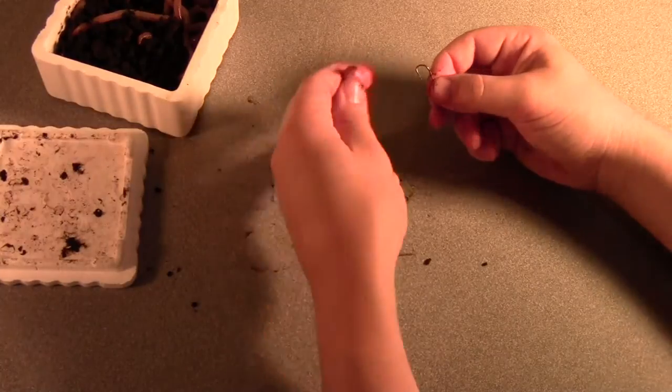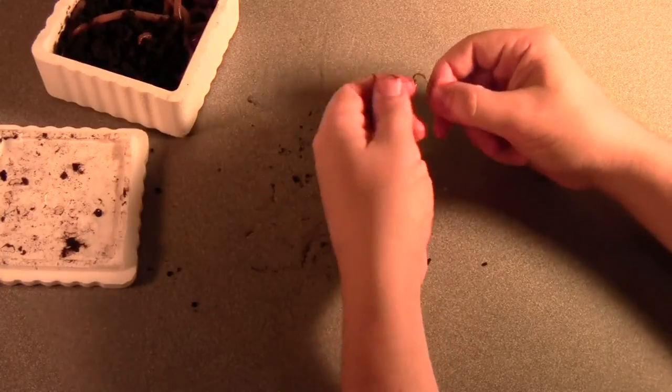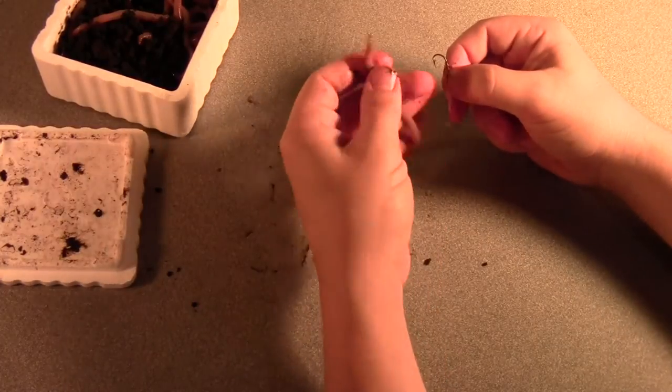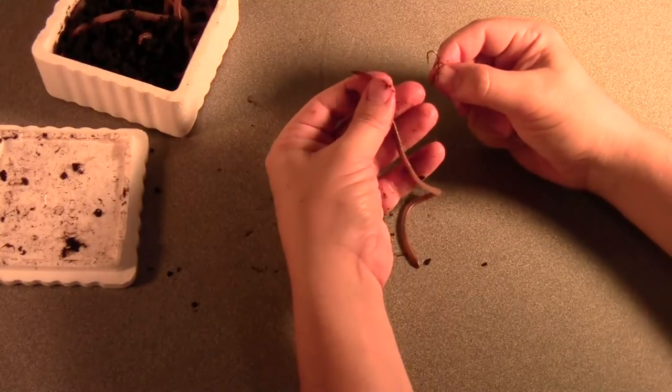I have here a baby night crawler and I have a size 6 hook and I'm going to give this a try. This isn't necessarily the best way to do it but it's the way I've used for a long time and it seems to have served me well.